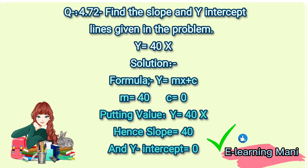Given in the problem, Question Number 72 is Y = 40X. This question we have slope and y-intercept to find. Solution: Using the formula Y = mx + c, where m is the slope, we have 40.